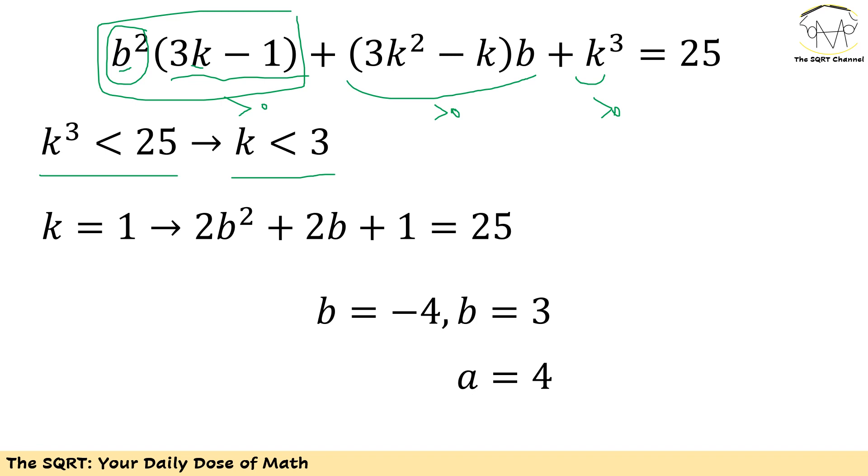So let's start with k equals 1. If I have 1 for k I'm going to have b²(2) plus 2b plus 1 equals 25. This is a quadratic equation and you can solve it simply. You're going to end up with 3 and negative 4 for b and we know that b is a positive integer so negative 4 is invalid but b equals 3 is valid. If b is 3 then a is going to be 4.